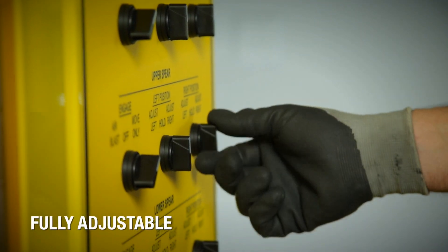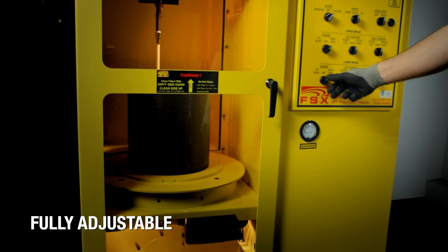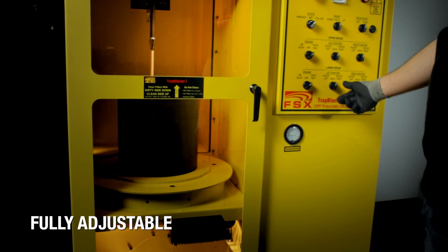The Trap Blaster can be adjusted on the fly to focus clean on heavily loaded areas. Most DPFs are completely clean in 22 minutes.